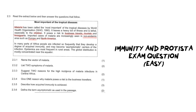In many parts of Africa, people are infected so frequently that they develop a degree of acquired immunity, and they may become what we call asymptomatic carriers of the infection. Epidemics are most frequent in rural areas and the global distribution is mostly concentrated near the equator, letting us know where we see the highest levels of malaria. Let's get into the questions now.